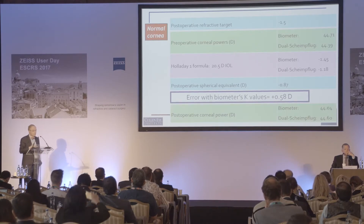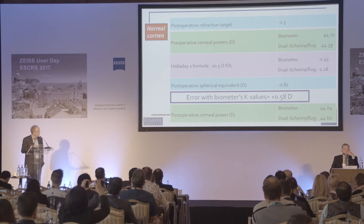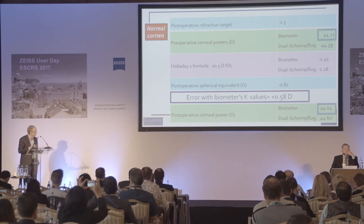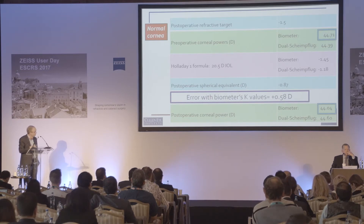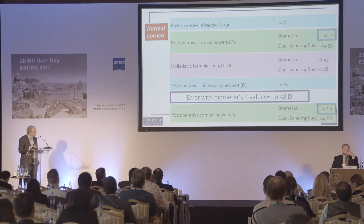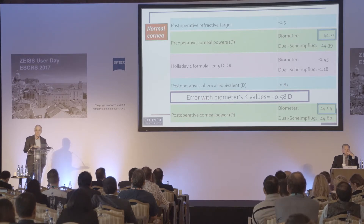I repeated the measurements because I was surprised, and what I found was the biometer measured much lower on the second go-around, which would have actually corrected the error of 0.58 that you see here, and the dual Scheimpflug device actually gave a steeper cornea. So that's what we face every day in practice — variable corneal readings.